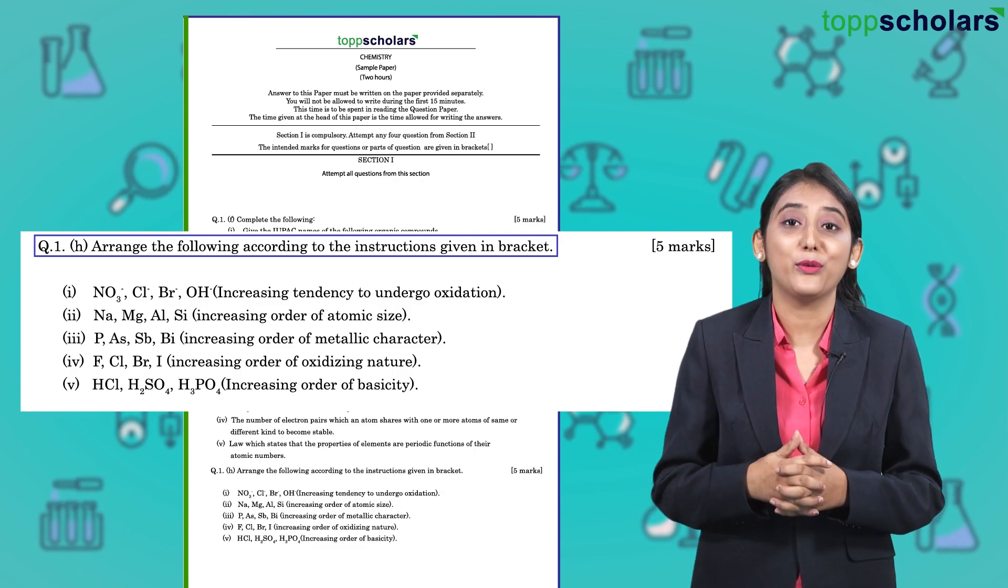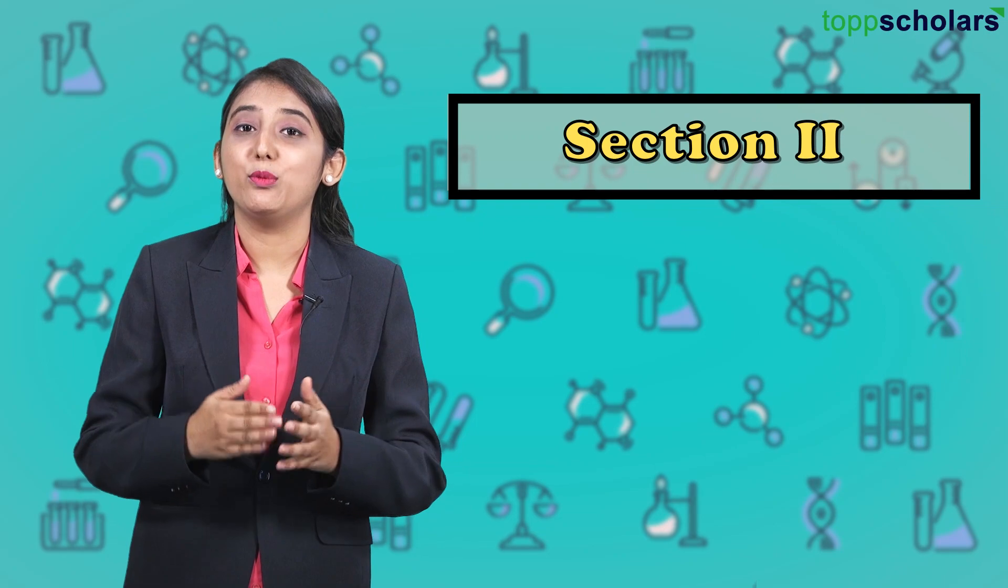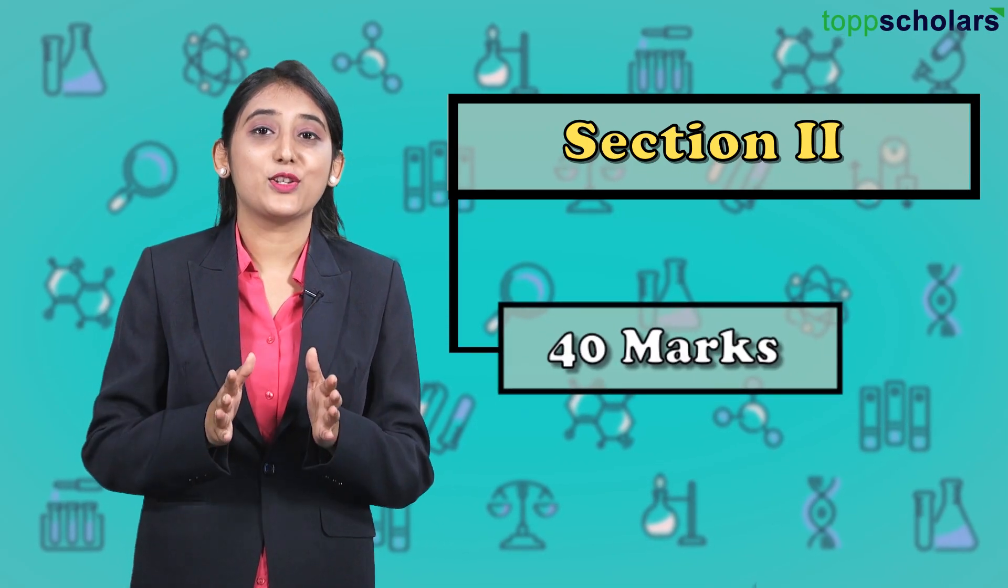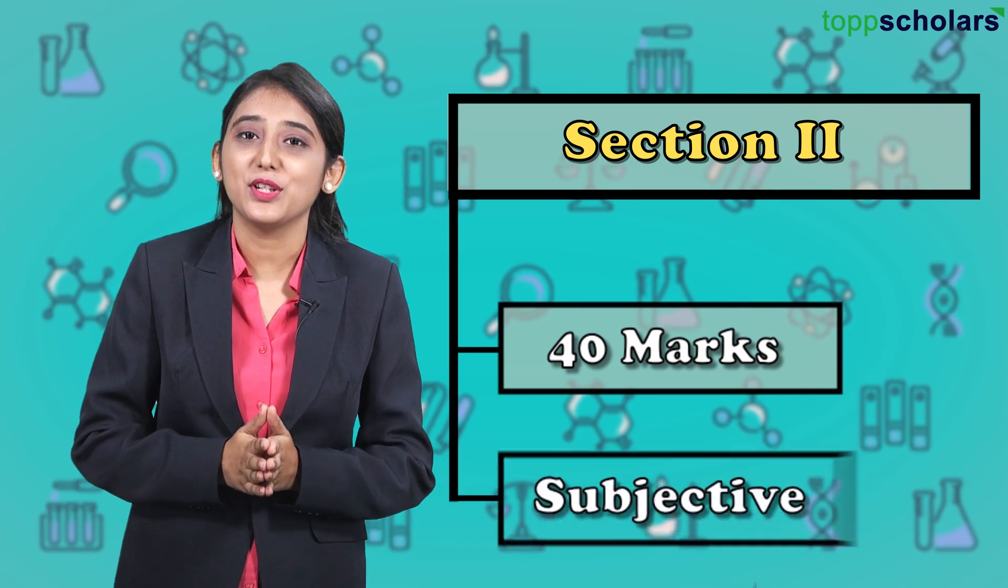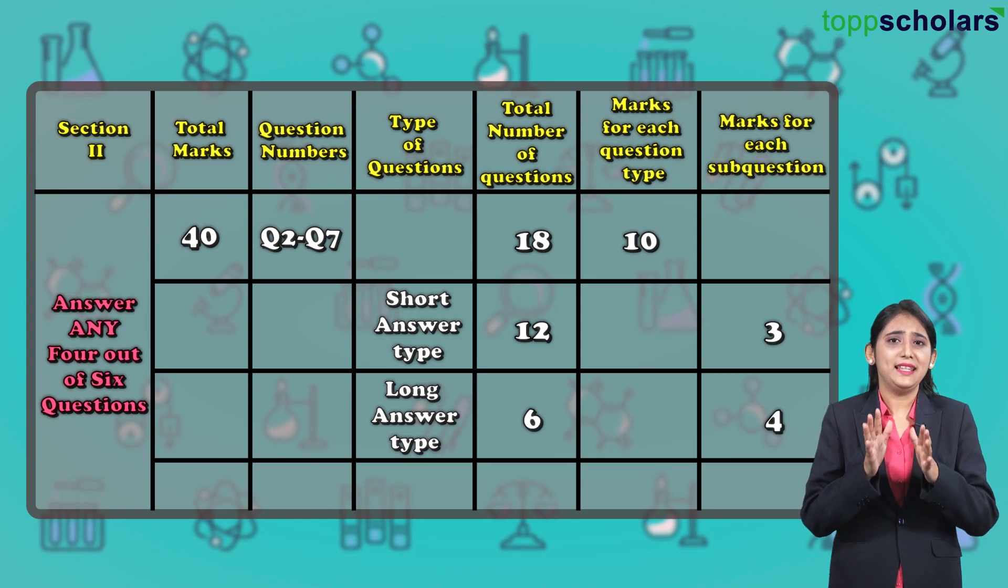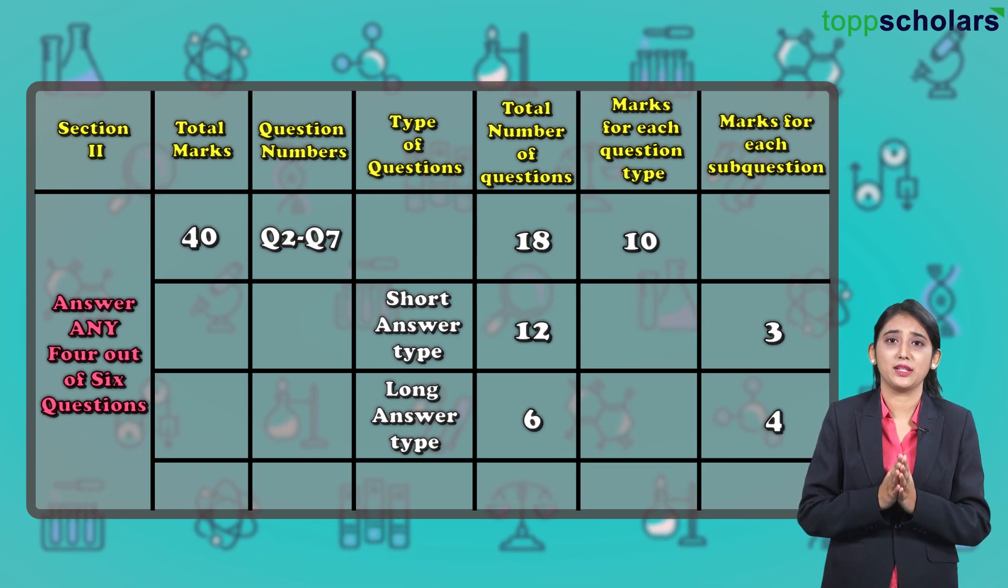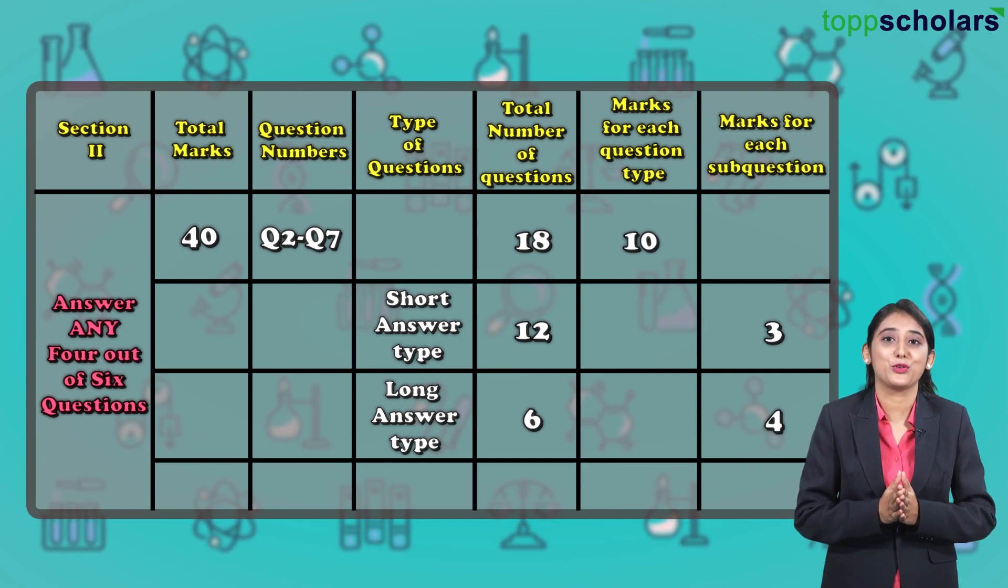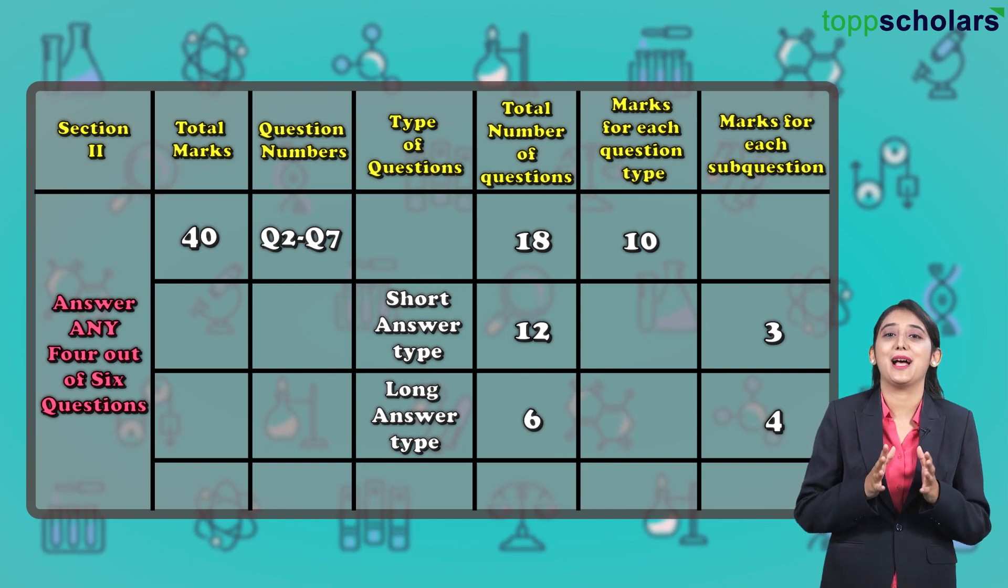So now let us move to Section 2, which also carries a total of 40 marks. This section is completely based on subjective type questions, that is from question number 2 to question number 7. In this section, you have 6 questions out of which you need to attempt any 4 questions of your choice. So something to be happy about, right?